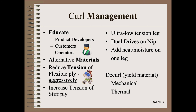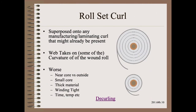These are covered in great detail in my Web 101 class, which can be taken on demand through AIM-CAL's Converting School Online. Roll set curl is a subset of environmental curl. It is easy to diagnose from other forms of curl because it is worse near the core. It is easy to list the options allowed by physics, though many will not be pleasant because they may involve product design such as core diameter.